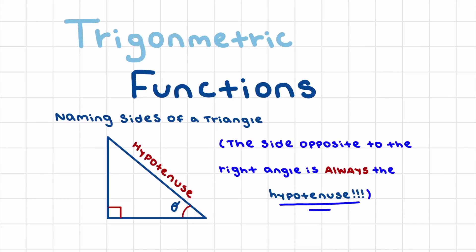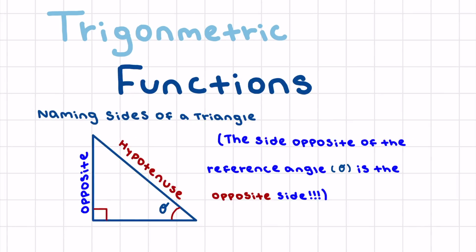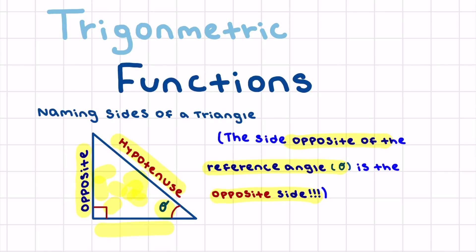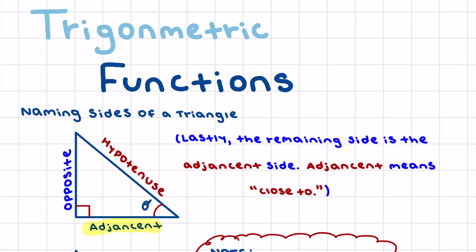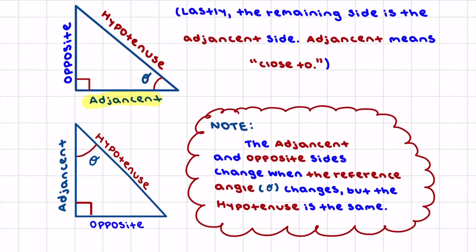Now we're going to talk about naming the sides of a triangle. The first is the hypotenuse — the side opposite to the right angle is always the hypotenuse. The side opposite the reference angle theta is called the opposite side. The last remaining side is called the adjacent side, meaning right next to theta.